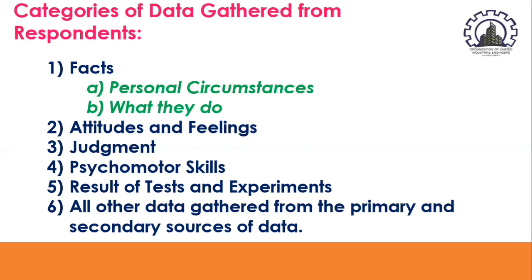If we say psychomotor skills, these data refer to the manipulative skills of the individual and his activities that involve his five senses — sight, hearing, taste, smell, and touch. We would ask: how skillful does one operate a microscope? How well does he respond to sound, to touch? There is an element of judgment because the performance of an individual is usually judged in comparison with the performance of an average individual.